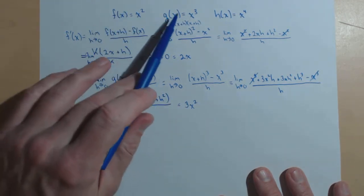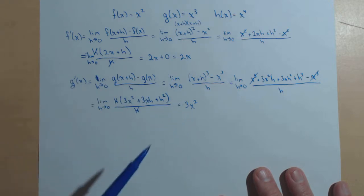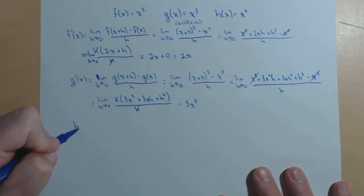You might be starting to notice a pattern because if g of x is x cubed, g prime of x is 3x squared. Let's see if we can confirm that with x to the fourth.